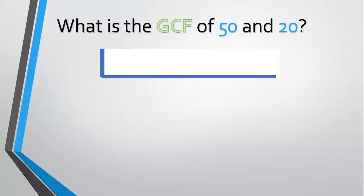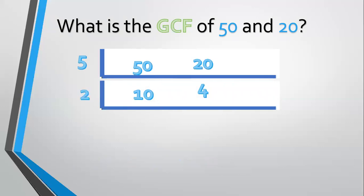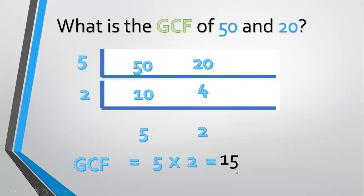Another one — how about 50 and 20? List them: 50 and 20. The common factor is 5. 50 divided by 5 equals 10. 20 divided by 5 equals 4. There's still a common factor — that is 2. 10 divided by 2 equals 5. 4 divided by 2 equals 2. Now 5 and 2 have no more common factor, so we multiply: 5 times 2 equals 10. The GCF is 10.